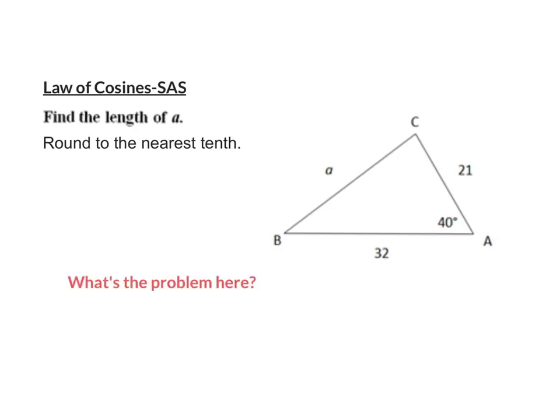So what's the problem here? There's not another angle. I don't have more than one angle, and the angle that we're given — we don't have the side that's opposite. That's what we're actually trying to find. So whenever we would use law of sines, we need that opposite side-angle combination where we know both, but that doesn't exist here.